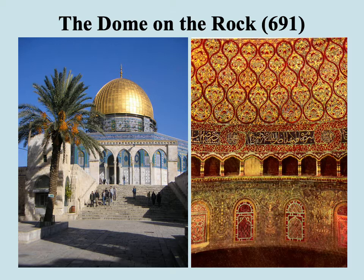Probably one of the earliest structures we can talk about as being purely Islamic might be the Dome of the Rock, located in Jerusalem, dating back to 691 — very early on during the Umayyad Caliphate. The Dome probably does reflect some Christian influence, for instance the Church of the Holy Sepulchre, which already existed and had a dome. But in other respects it really is starting to look like something very unique in terms of its geometrical structure.